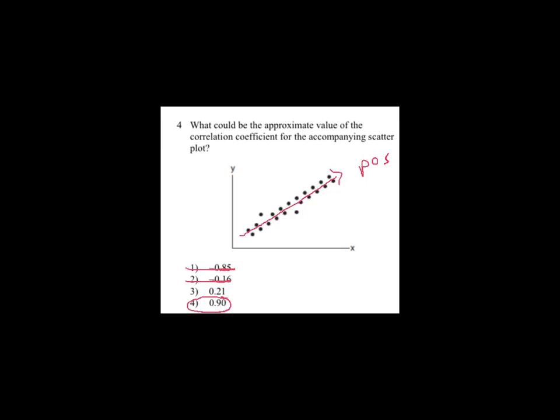And then because it's such a strong pattern, I'm going to choose the 0.9. The 0.21 would be very, very weak, and you'd see more erratic, spread-out behavior if that was true.